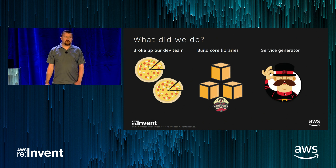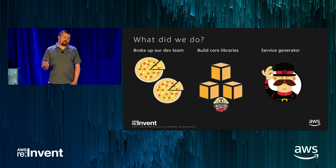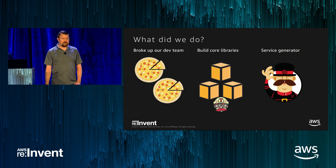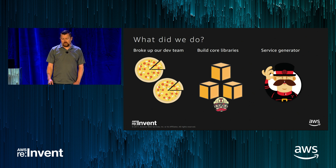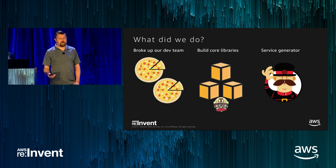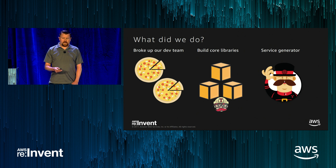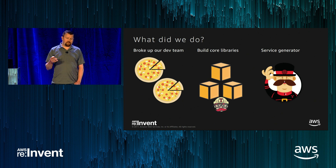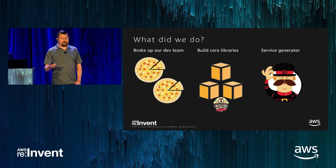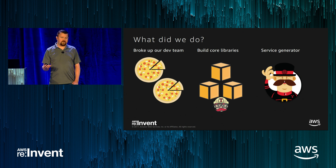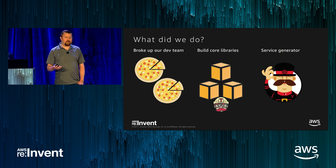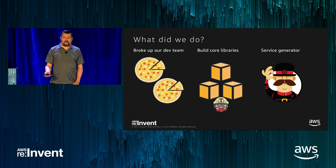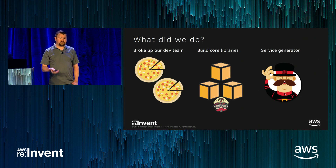We built a service generator using Yeoman, which Microsoft was putting out at the beginning of .NET Core. The service generator allowed us to quickly scaffold new services. We came up with a base template of what a microservice should look like — from your API layer all the way to your data layer — put it in Yeoman. Developers pull the Yeoman generator down, type a few commands, and have a microservice pulling in all base common libraries that will run right away. This allowed us to get new microservices from nothing to a full running service in under a day.